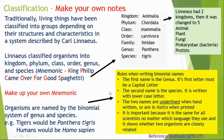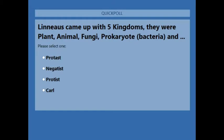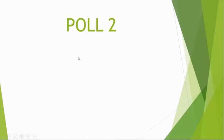Welcome to the first poll. This is a very difficult question: Linnaeus came up with five kingdoms — plant, animal, fungi, prokaryote — and what was the other? Congratulations to the 95% of you who put protist!